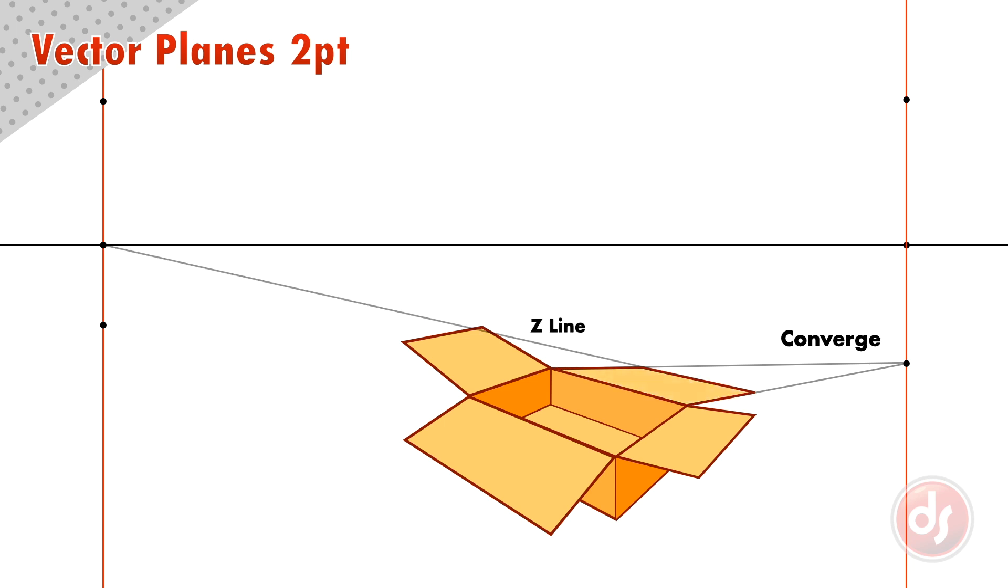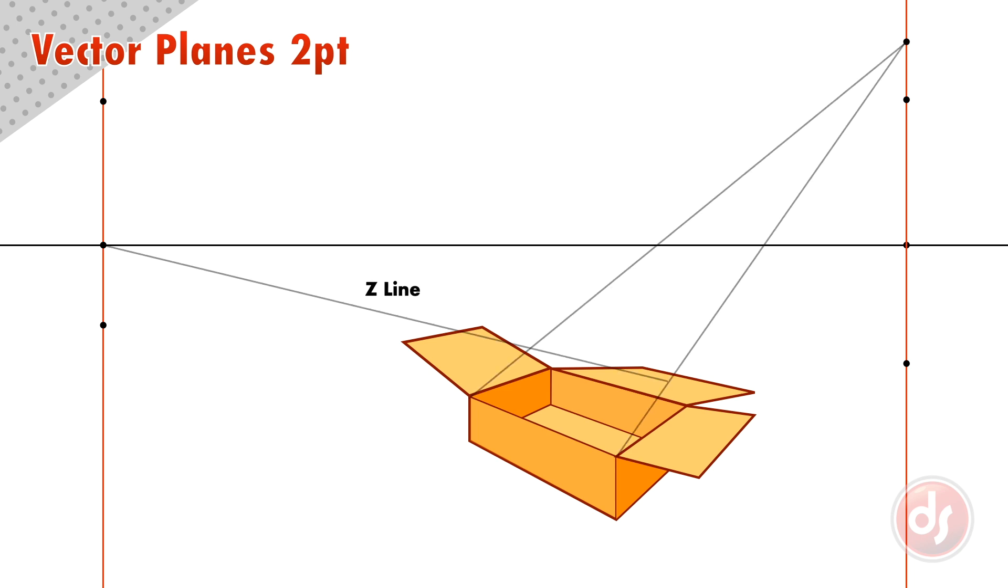The key to understanding whether a vector plane is converging or diverging is to decide if it moves closer to the viewer or farther away. We could change this front vector plane to move it away from the viewer by simply converging the lines to the right vertical horizon line. The direction and angle of the vector planes are totally up to you, and all depend on where you put the vertical vanishing points on the vertical horizon line.